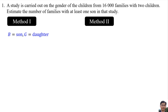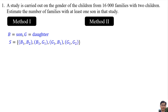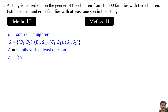Method 1: Let B be son and G be daughter. So the sample space is {B1,B2}, {B1,G1}, {G1,B1}, and {G1,G2}. Let A be the event of a family with at least one son. So set A is {B1,B2}, {B1,G1}, and {G1,B1}. The probability of Event A is 3 over 4.